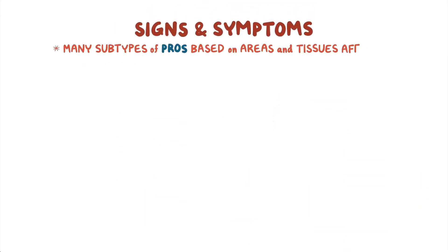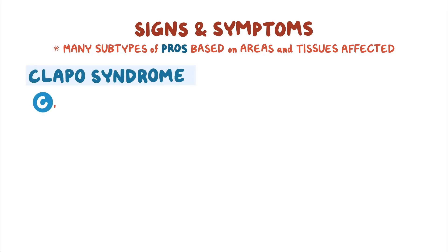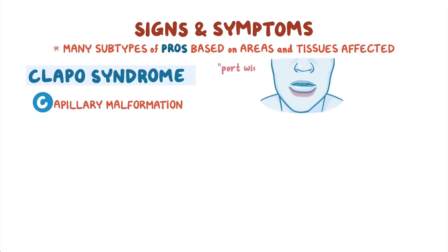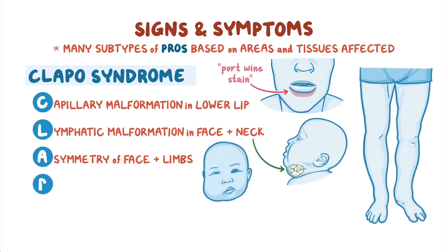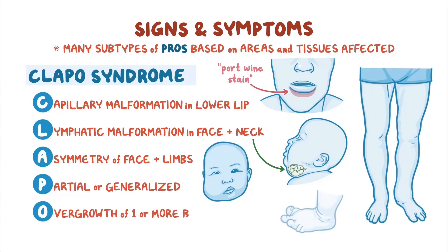There are many subtypes of PROS, based on the areas and tissues affected. CLOVES syndrome involves capillary malformation, also known as port wine stain in the lower lip, lymphatic malformation in the face and neck, asymmetry of the face and limbs, and partial or generalized overgrowth of one or more body segments.